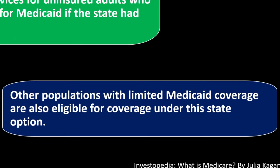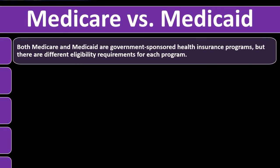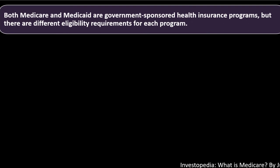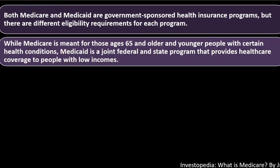Other populations with limited Medicaid coverage are also eligible for coverage under the state option. Medicare versus Medicaid — you don't want to get those two confused. Both Medicare and Medicaid are government-sponsored health insurance programs, but there are different eligibility requirements. While Medicare is meant for those ages 65 and older and younger people with certain health conditions, Medicaid is a joint federal and state program that provides health care coverage to people with low incomes.